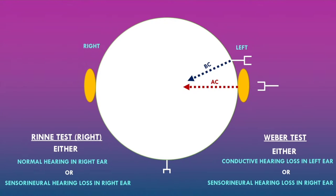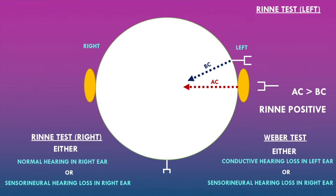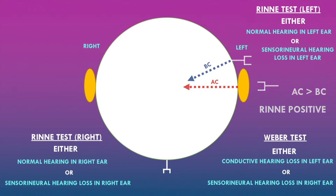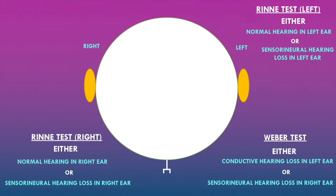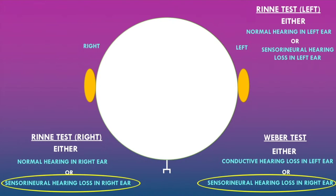Now consider the Rinne test in the left ear. Again, air conduction was greater than bone conduction — a Rinne positive test — indicating either normal hearing or sensorineural hearing loss in the left ear. To determine the overall diagnosis, we need to see where the Weber test and Rinne test agree. In the right ear, both agree that there is sensorineural hearing loss in the right ear, confirming the lateralization seen in the Weber test.